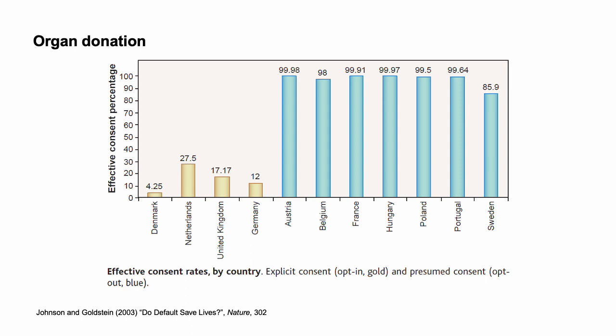However, it is possible to argue that the stickiness of defaults is due to a rational cost-benefit calculation rather than loss aversion or present bias. The cost of opting out is real, and people may not have a strong preference about whether they are an organ donor. Further, registration does not mean that your organs will be donated — other factors such as family preference affect donation. The absence of active consent in presumed consent situations means the family cannot take the organ donation register as an indication of the deceased's wishes. There is little benefit in changing the registration if it will have little effect on actual organ donation.